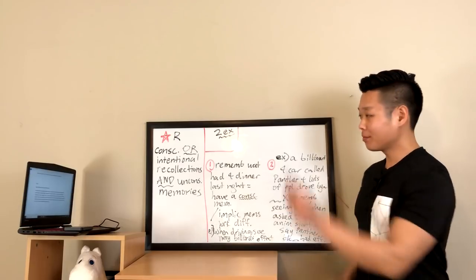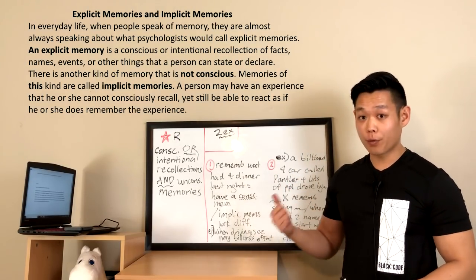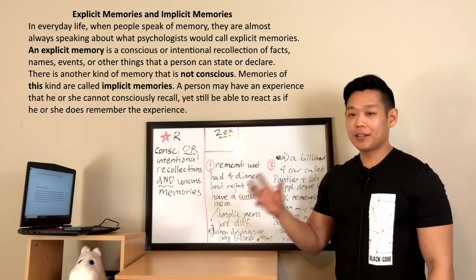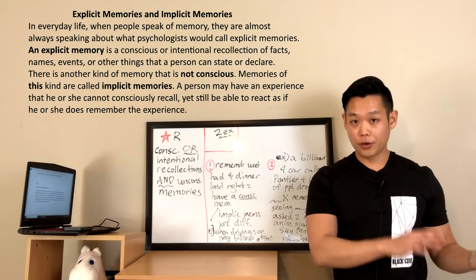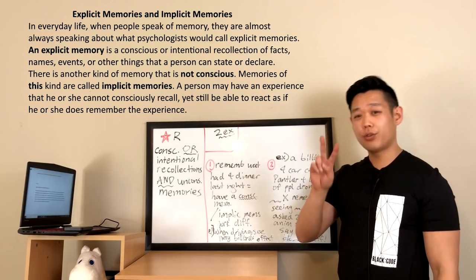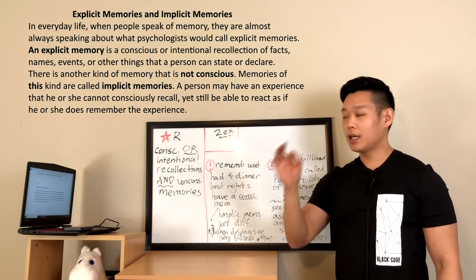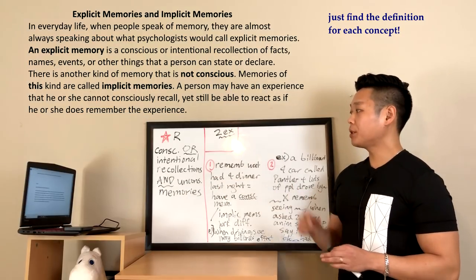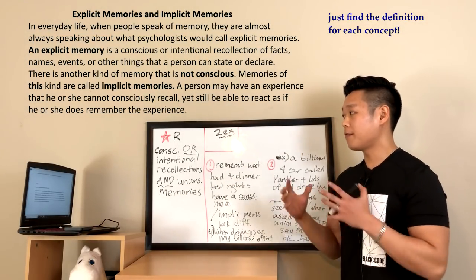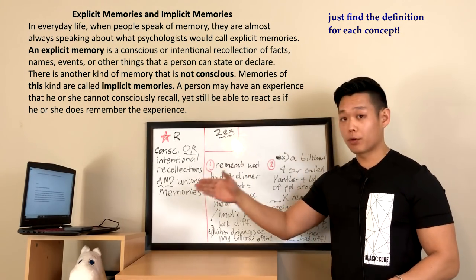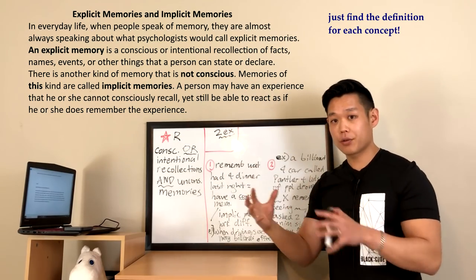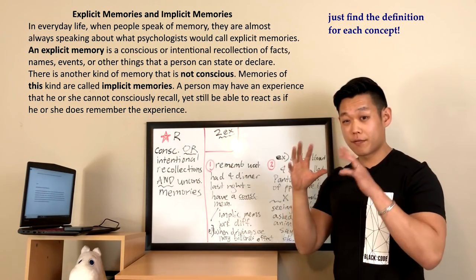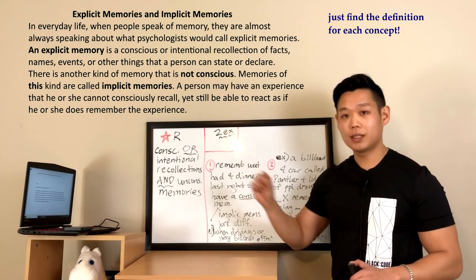That's the Task 4 reading passage we'll be covering today. The topic is explicit memories and implicit memories. Getting the definition for this topic is a little more difficult than other Task 4 topics because there are two different concepts. Let's focus on getting each definition. An explicit memory is a conscious or intentional recollection of facts — so the definition is: explicit memories are conscious or intentional recollections.